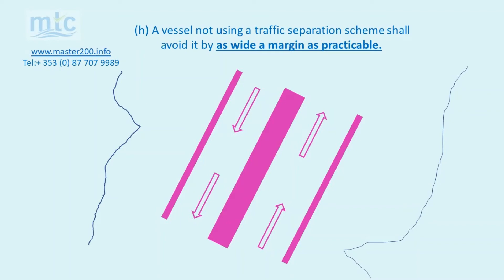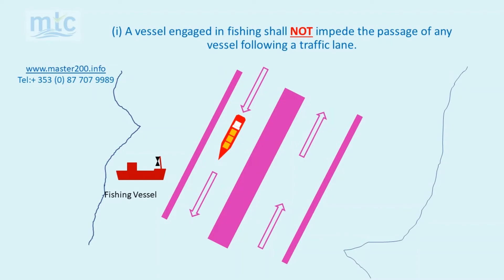A vessel not using a traffic separation scheme shall avoid it by as wide a margin as practicable. Rule 10i: a vessel engaged in fishing shall not impede the passage of any vessel following a traffic lane. This means a fishing vessel must comply with Rule 8f and take early action to allow sufficient sea room for the safe passage of the other vessel.